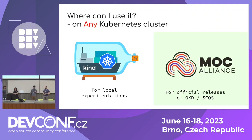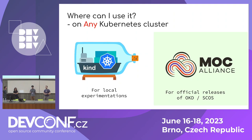As Shirin was saying, we are doing all of this work to be cloud-native and Kubernetes-native. If you want to try out our pipelines, you can run them locally on any Kubernetes cluster — for example, on kind. At production grade, we run them on hosts provided by the MOC Alliance, a collaboration that Christian will now introduce.